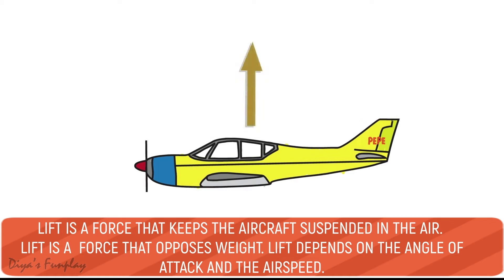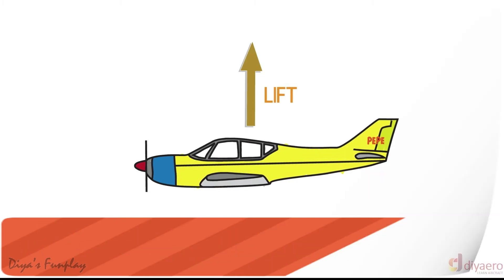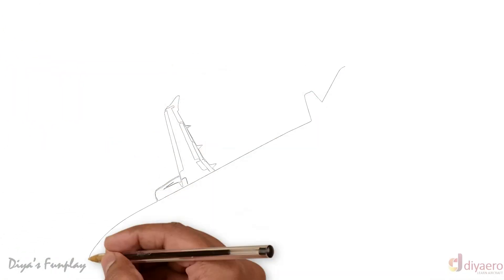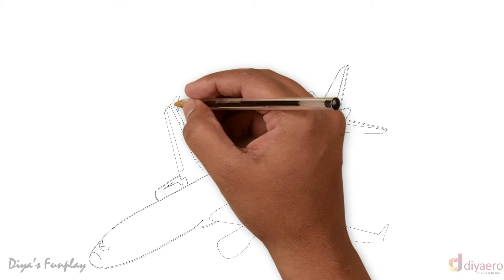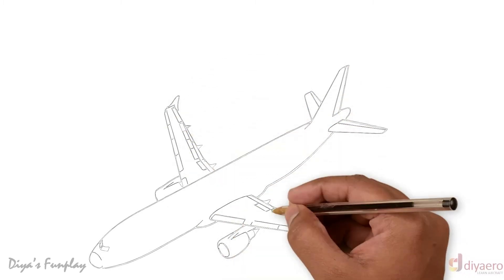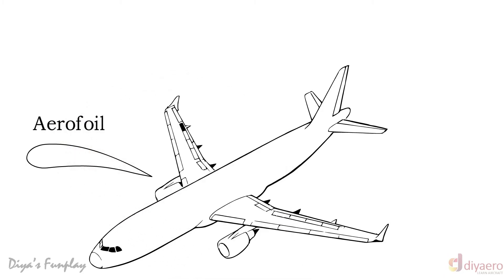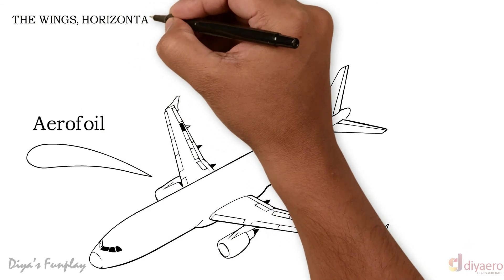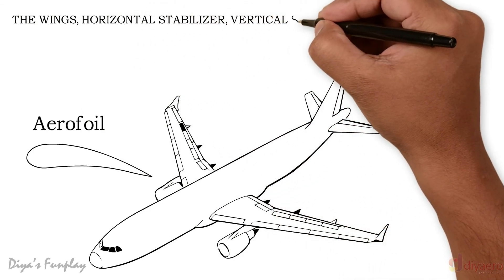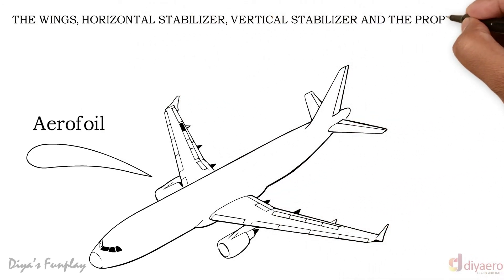Lift is a force that keeps an aircraft suspended in the air and opposes weight. Lift depends on the angle of attack and the airspeed. It acts through the center of pressure and moves continually with changes in the angle of attack. Lift is generated by the wings, which are aerofoils. An aerofoil is a surface designed to lift, control, and propel an aircraft with the help of the air flowing around it. The shape of an aerofoil is the cross-section of the wing.